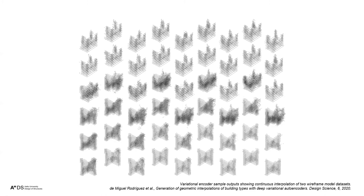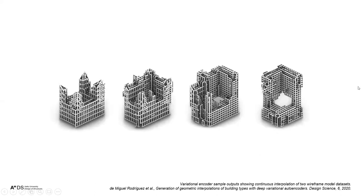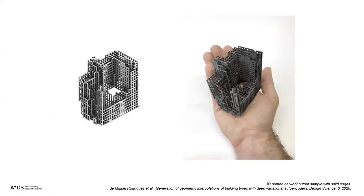Unfortunately the vertical lines are missing in this example due to a glitch from Rhino, but they should also be there. These are sample outputs — you can go from the castle model and interpolate continuously to the CCTV tower, creating a machine that gives different hybrids of the two datasets. Ideally you would use a lot more than two models.